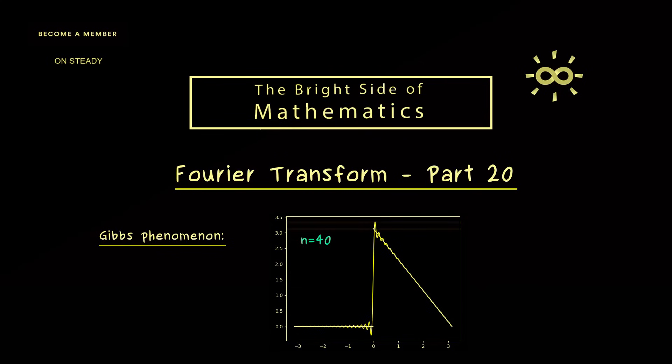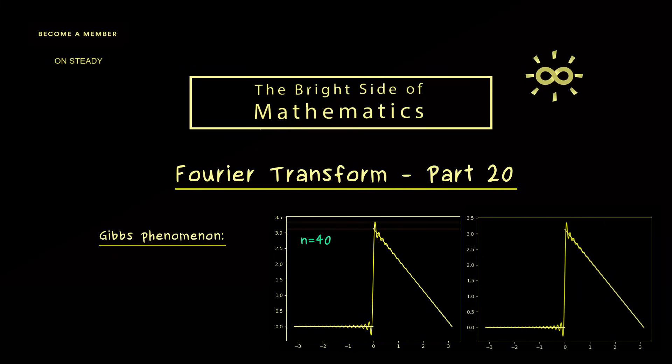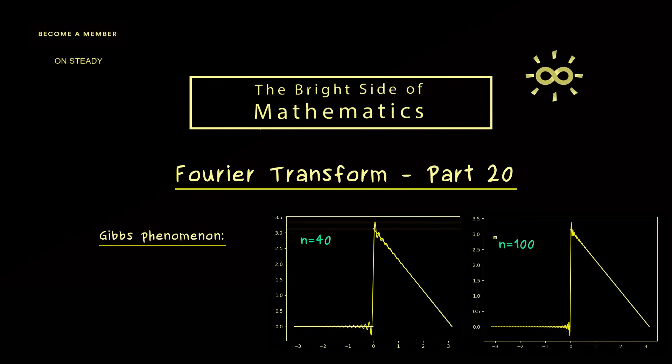Therefore let's look at a larger n here on the right hand side. For example, we could go to n equals 100 and then we see we have a nice pointwise convergence. But we also recognize that this overshooting is still there and it's exactly of the same amount as before.